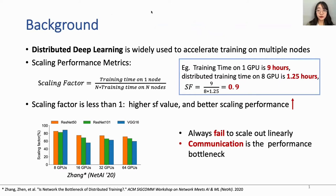Nowadays, training deep neural networks is a time-consuming process. Distributed deep learning is widely used to accelerate training on multiple nodes. The metric to depict scaling performance in distributed deep learning is the scaling factor, which equals the training time on one node divided by n multiplied by the training time on n nodes. For example, when training time on one GPU is 9 hours and distributed training on 8 GPUs is 1.25 hours, the scaling factor equals 9 divided by 8 multiplied by 1.25, giving 0.9. A higher scaling factor means better scaling performance.